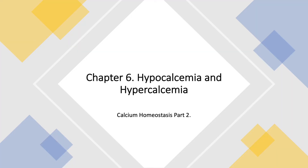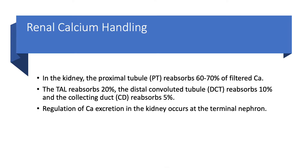We are still on Chapter 6, Hypocalcemia and Hypercalcemia. We continue to discuss calcium homeostasis. In the kidneys, the proximal tubule reabsorbs 60 to 70 percent of filtered calcium — similar to what happens with potassium and sodium. The thick ascending loop of Henle reabsorbs 20 percent, the distal convoluted tubule reabsorbs 10 percent, and the collecting tubule reabsorbs 5 percent.